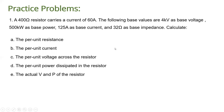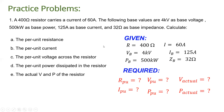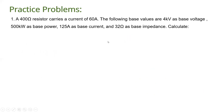Writing the given values: R = 400 ohms, base voltage = 4 kilovolts, actual current = 60 amperes, base power = 500 kilowatts, base current = 125 amperes, and base impedance = 32 ohms. The problem asks us to solve for the per unit resistance, per unit current, per unit voltage, per unit power, and the actual voltage and power of the resistor. Let's demonstrate the solutions.